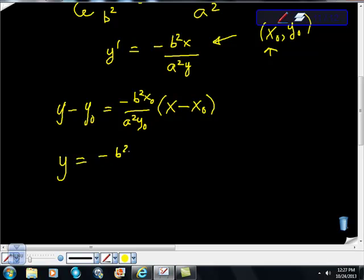so b squared x initial, a squared y initial times x minus x initial, in this case plus y initial. So there's my answer,